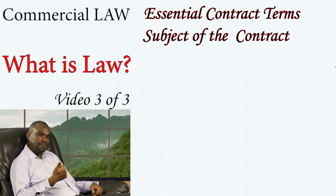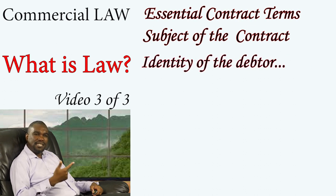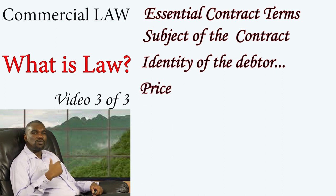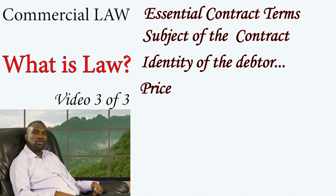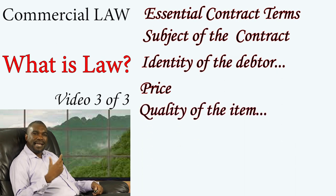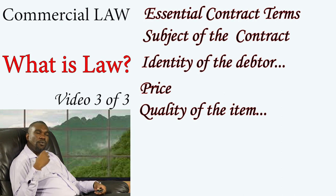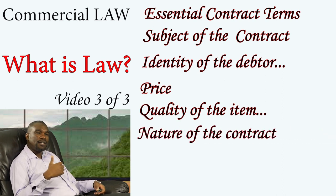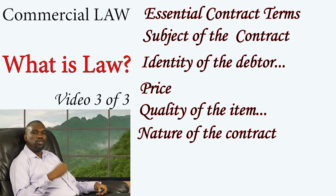On the essentials of the contract, they need to be stated, explicit, certain, and known. The essential terms are: number one, the subject of the contract; number two, the identity of the debtor in the obligation; number three, price; number four, the quality of the item you are contracting over; and number five, the nature of the contract. Signing for a term that is not clear does not make it a contract — it will still be void because the material term is not clear.